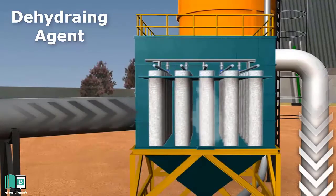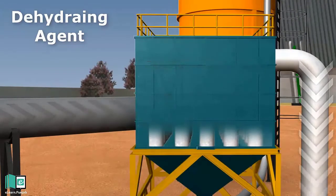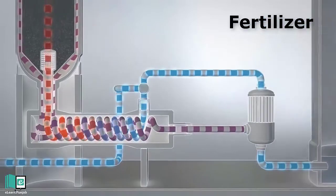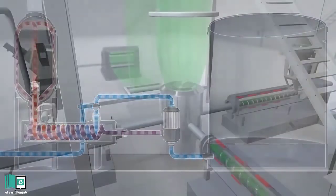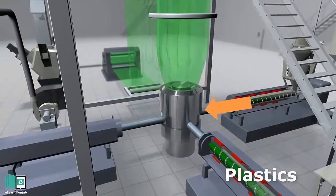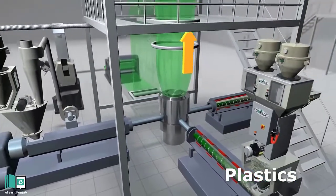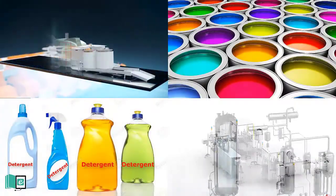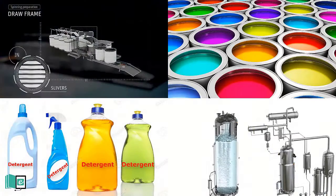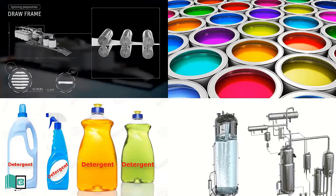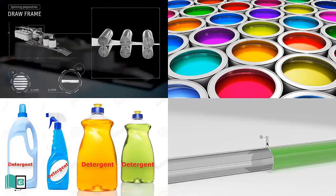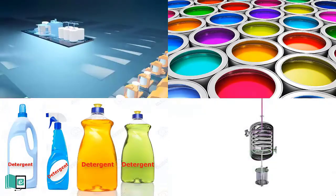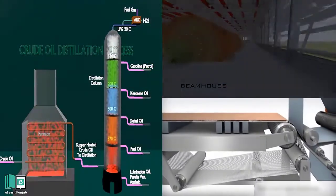Number 2: It is also used in the manufacturing of fertilizers. Number 3: Sulfuric Acid is also used in some special types of soft plastic. Number 4: It is also used to make artificial silk. Number 5: It is used in the print industry. Number 6: It is used to make drugs, detergents, and washing powder.